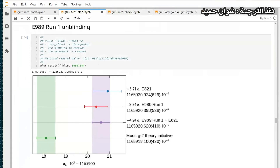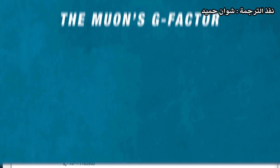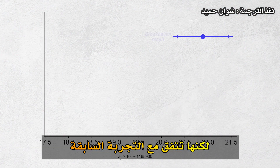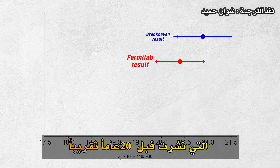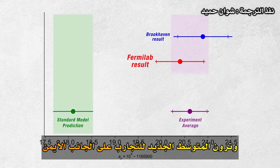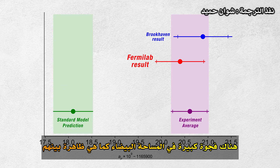The room erupted in excitement. The new result does not agree with the standard model prediction, but it does agree with the previous experiment published almost 20 years ago. You can see the standard model on the left side and the new average of the experiments on the right side, and there's a big gap of white space between them.